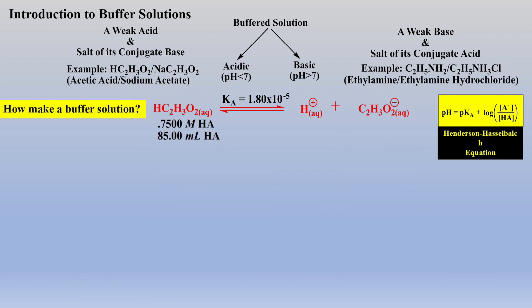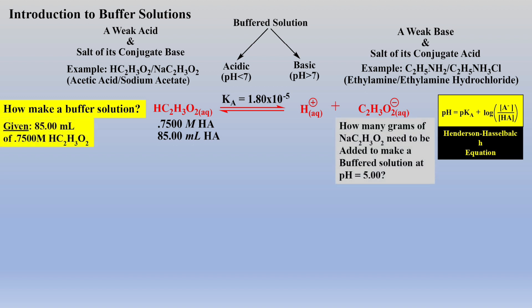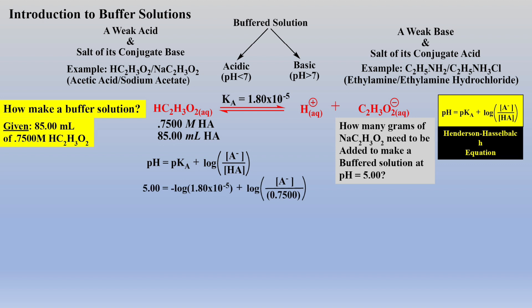Now that we know how a buffer solution works and how to use the Henderson-Hasselbalch equation, let's learn how to make a buffer solution. A typical exercise may be as follows: you are given the molarity and volume of weak acid and then asked how many grams of the salt of the conjugate base are required to afford some final pH — a pH of 5 in this example. Plugging in three of the four given values — the pH, the Ka, and the concentration of weak acid — into the Henderson-Hasselbalch equation allows one to calculate what the concentration of conjugate base needs to be to afford a final pH of 5.